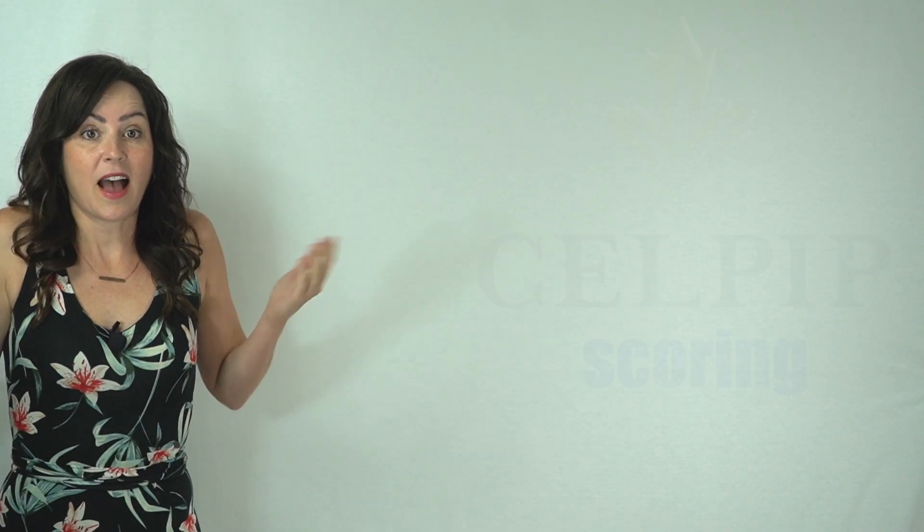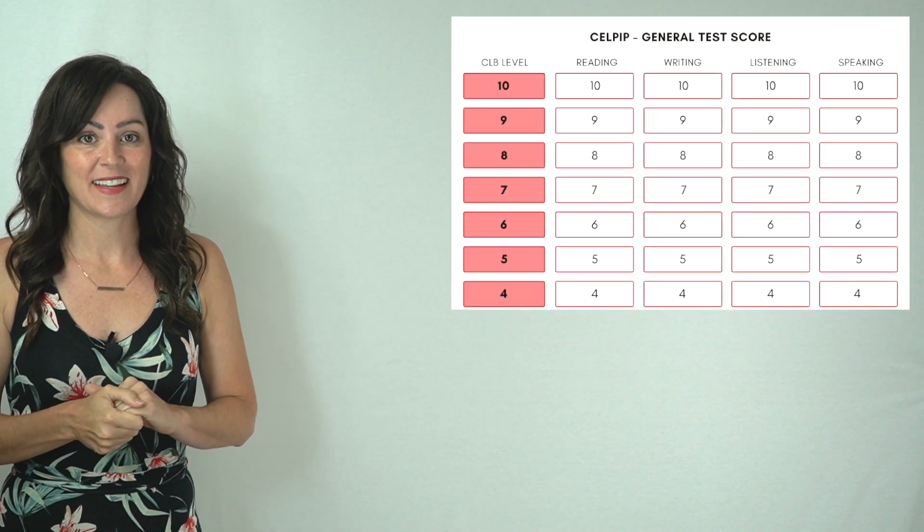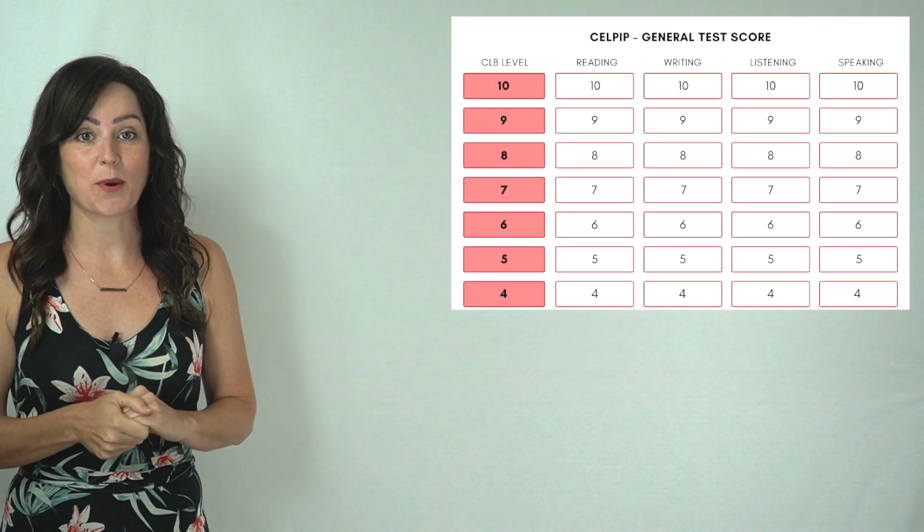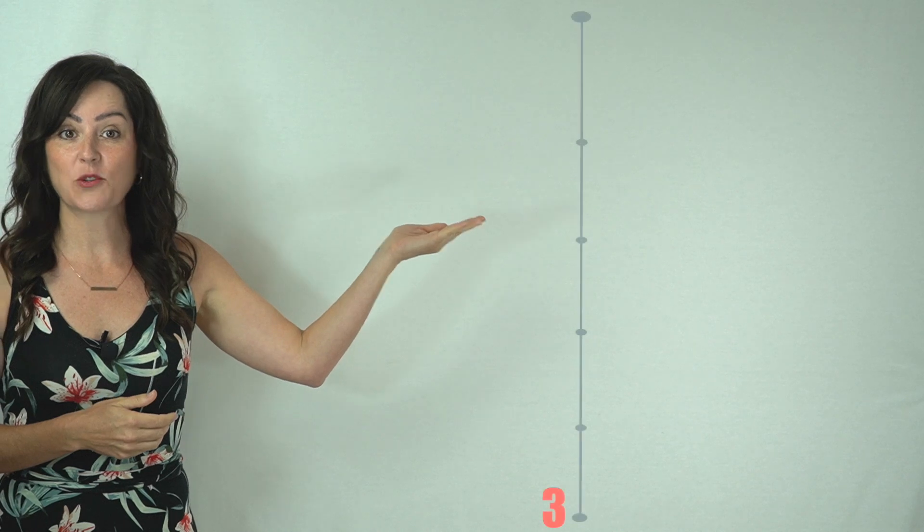Well, how is the CELPIP scored? Good question. There is no pass fail, just a score. CELPIP scores are calibrated using the Canadian language benchmark levels. The scale ranges from 3 to 12.